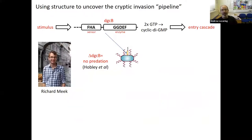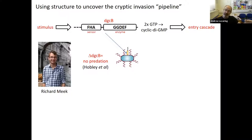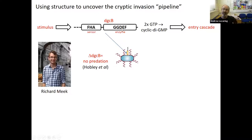The first project I'll describe is where I started in my lab. This is my first PhD student, Richard, whose project was to use structure to say something about the pipeline of events at the point of invasion. Our route into this was a mutant generated by Laura Hobley in Liz's lab where you knock out a diguanylate cyclase — and those predators can't kill. This is a signaling event that controls killing. The gene has a sensory FHA forkhead domain and an enzymatic domain, which when activated cyclizes two molecules of GTP to make cyclic di-GMP. Upstream is a stimulus that presumably results from interaction with prey; downstream are all the events coupled to invasion and killing.